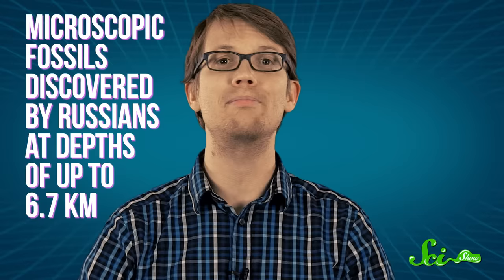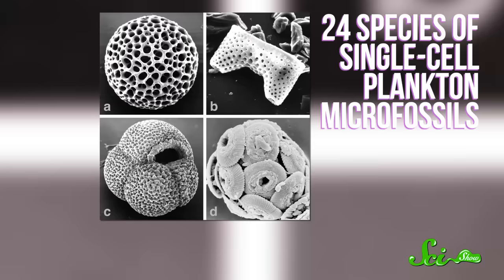Also surprising? How about microscopic fossils discovered by Russians at depths of up to 6.7 kilometers? Researchers catalogued 24 species of single-cell plankton microfossils over the course of the project, and they weren't found in the kinds of deposits we're used to finding them in, like limestone and silica. These were covered by organic carbon and nitrogen compounds, preserved thanks to those high pressures and high temperatures so far below the surface.